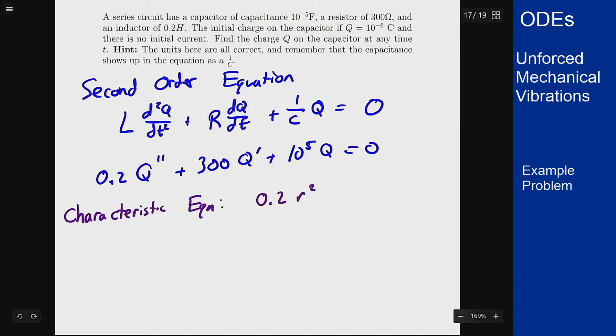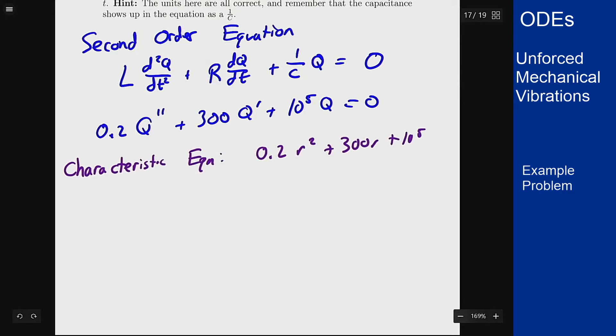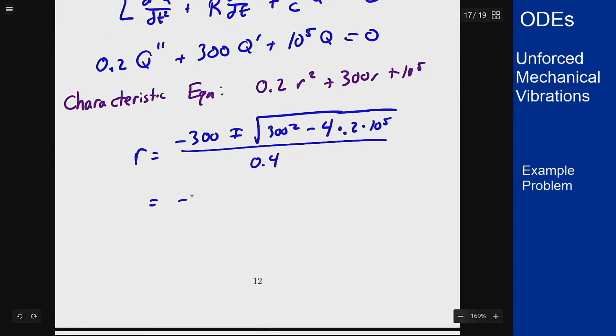0.2 r squared plus 300 r plus 10 to the fifth and that might factor but I'm going to use the quadratic formula instead just to make sure this works out correctly. So my roots r are at negative 300 plus or minus the square root of 300 squared minus 4 times 0.2 times 10 to the fifth all over 0.4. So minus 300 over 0.4 plus or minus the square root of 90,000 minus 80,000 all over 0.4.